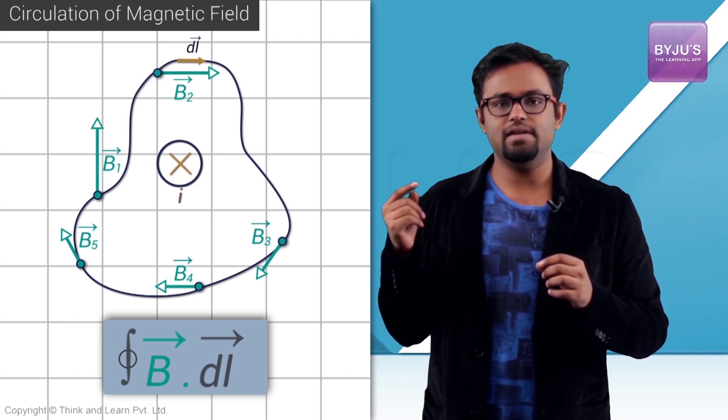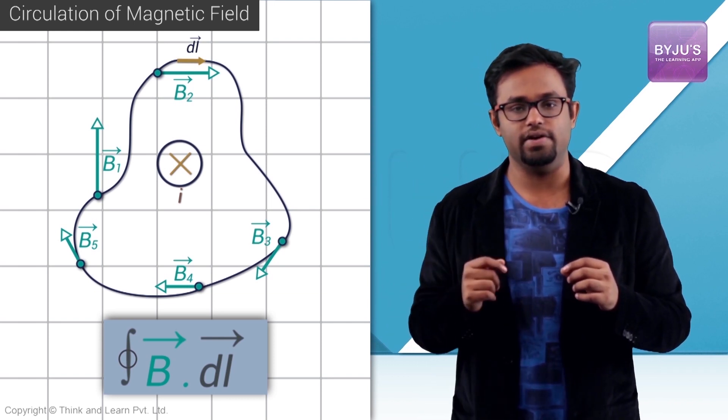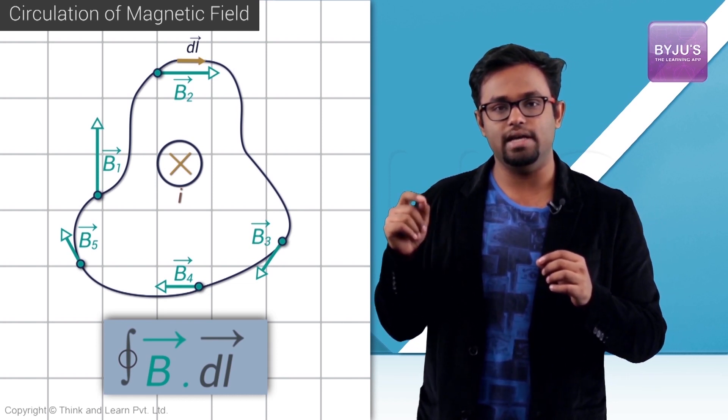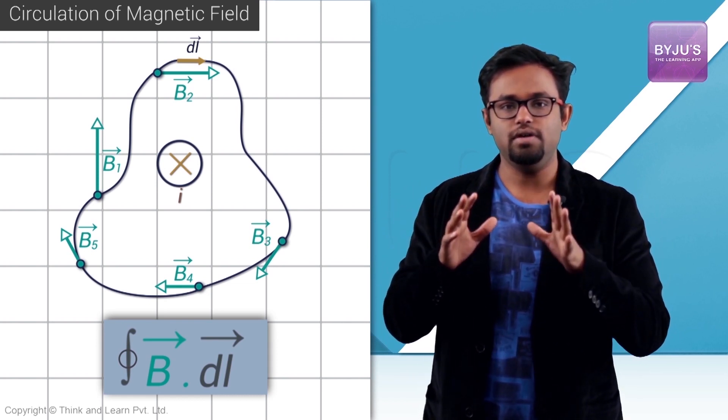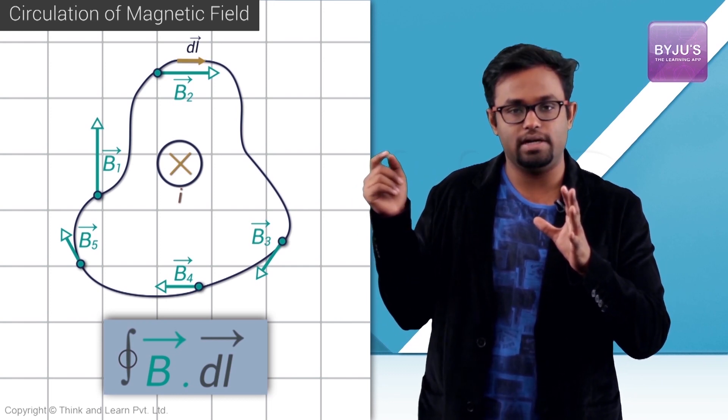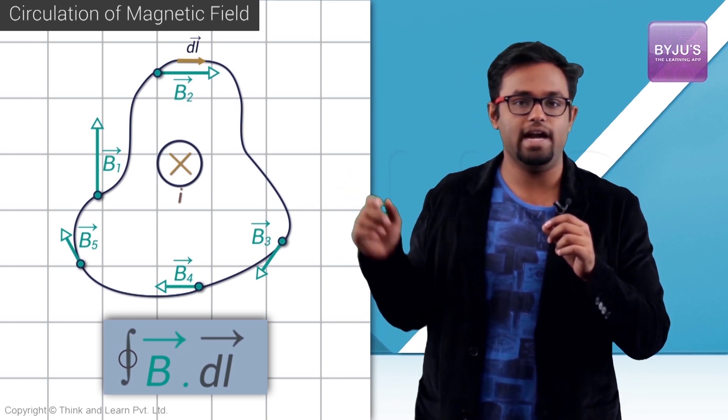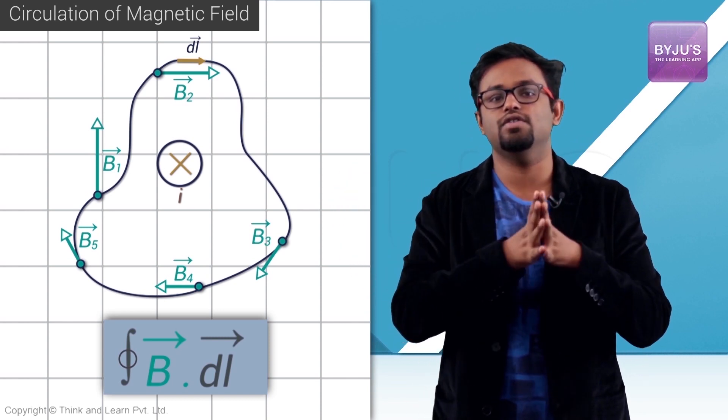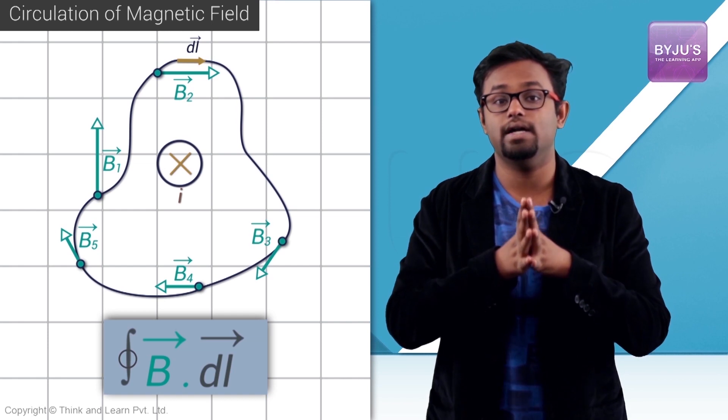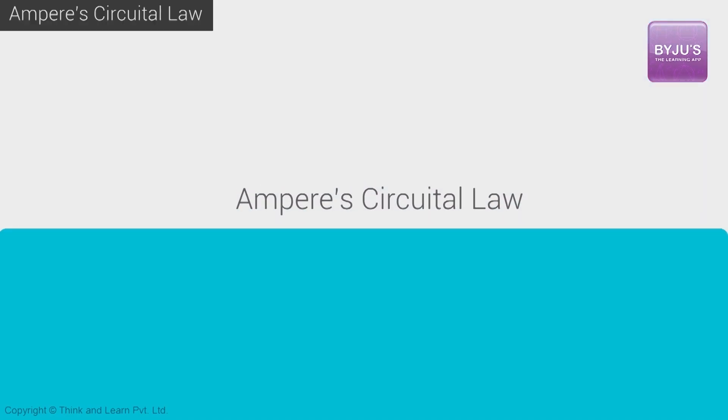What would this B dot DL give you? This B dot DL is nothing but the projection of B in the direction of DL multiplied with DL. So the integration of B dot DL gives you a summation of this value of magnetic field at that point which is tangential to that curve multiplied by the length of the curve. You add up all such elements and you get the circulation of magnetic field.